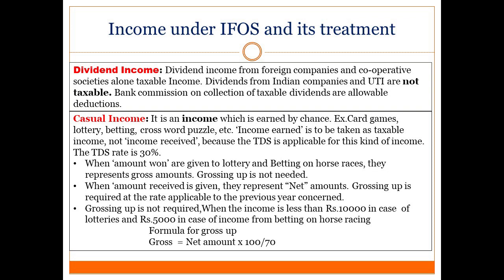Casual Income: It is an income which is earned by chance, e.g. card games, lottery income, income from betting, crossword puzzles, etc. The income earned is to be taken as taxable income, not the income received, because TDS is applicable for this kind of income. The TDS rate is 30%.